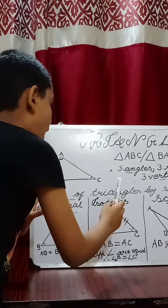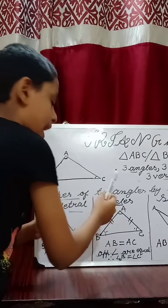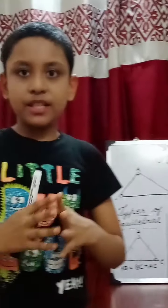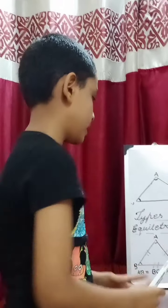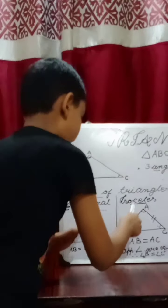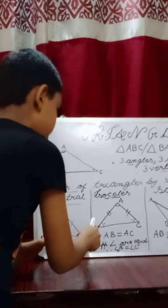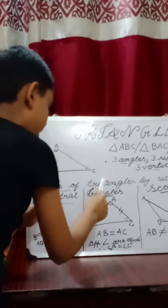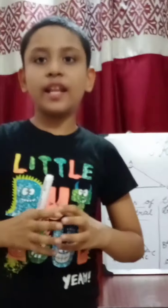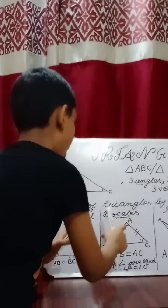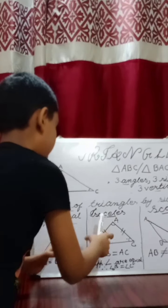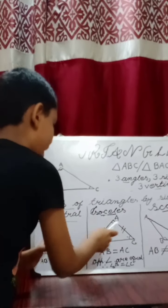In this figure, side AB is equal to side AC. Another fact about the isosceles triangle is that the opposite angles of the equal sides are equal.